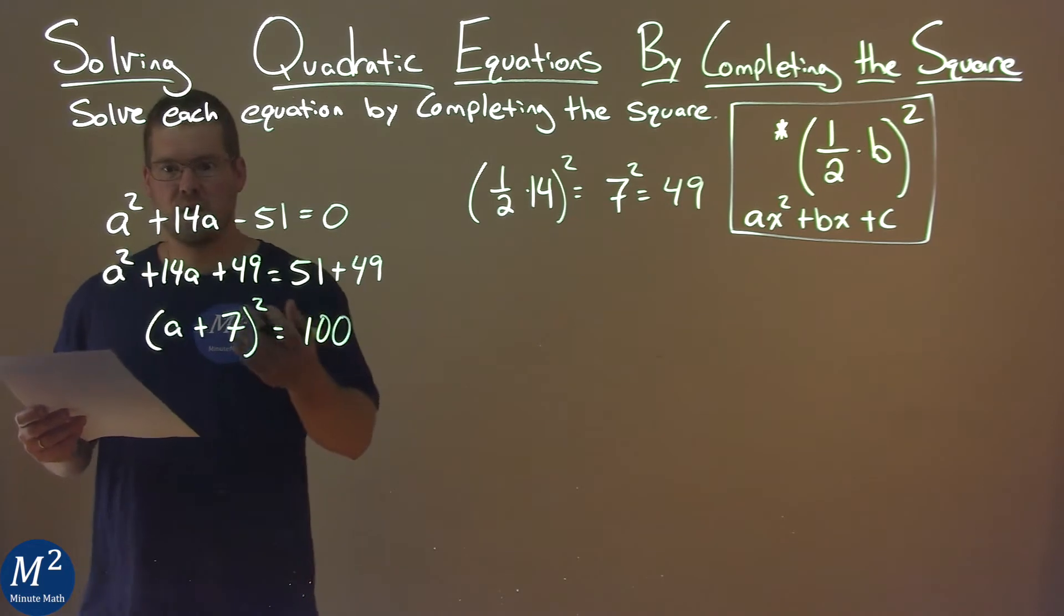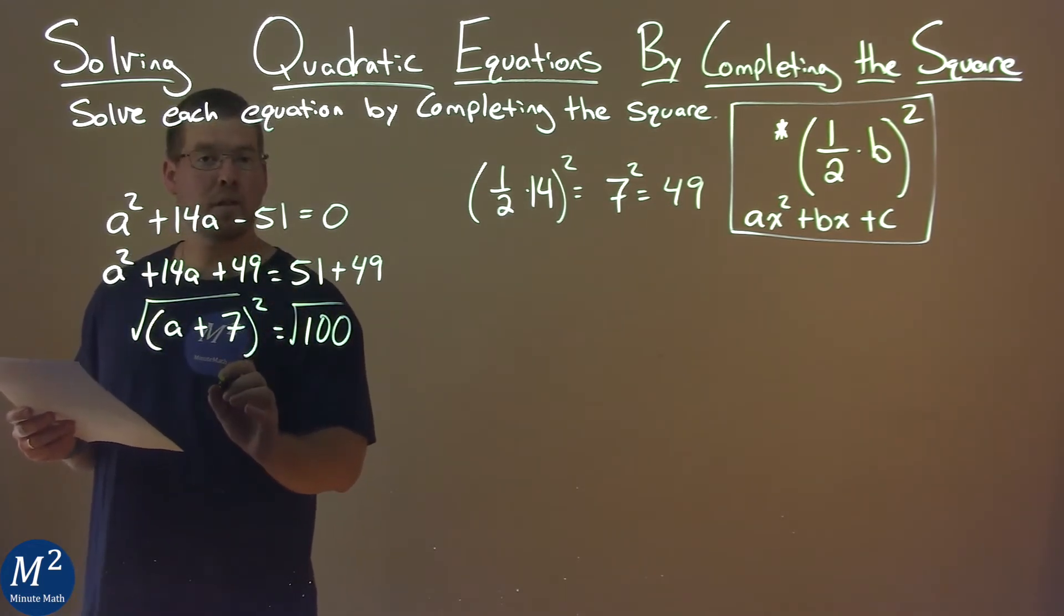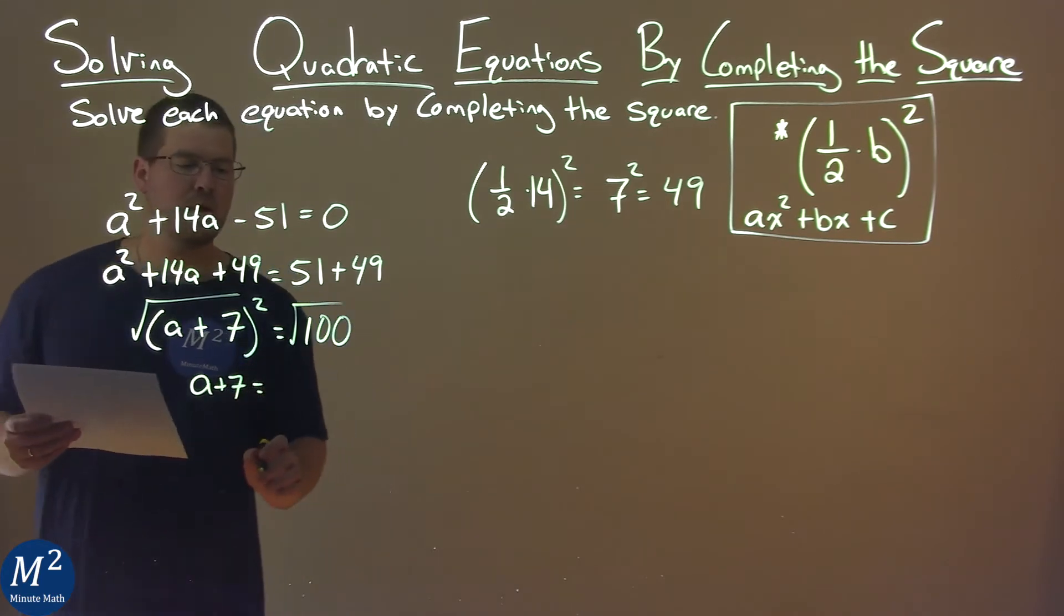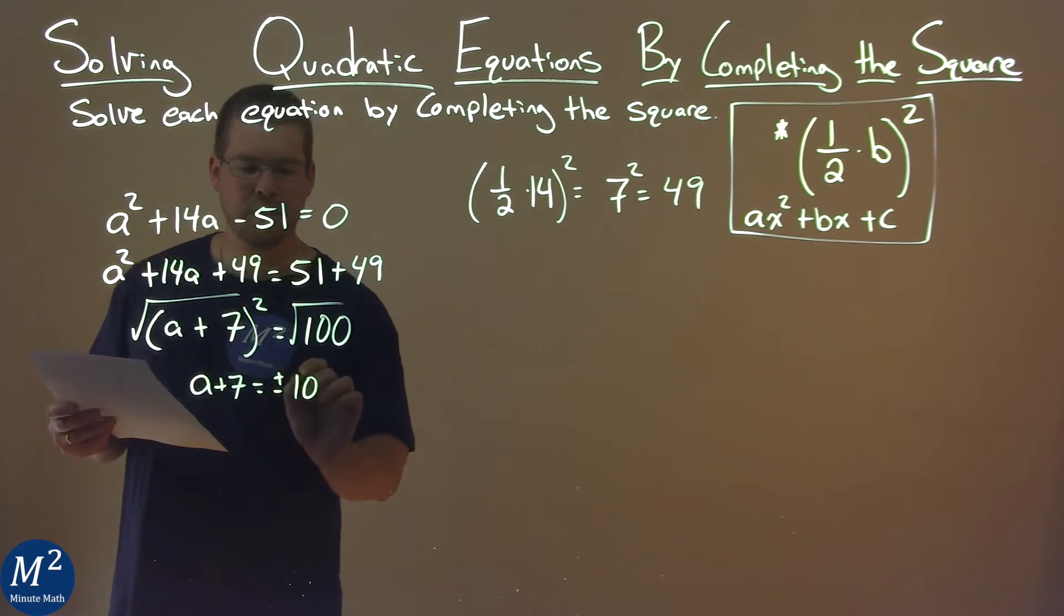So now we want to solve for a. We take the square root of both sides, eliminate the square root on the left, and we have an a plus 7 on the left. Square root of 100 is easy, it's 10, but we can't forget our plus and minus.